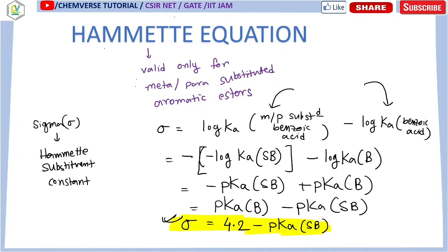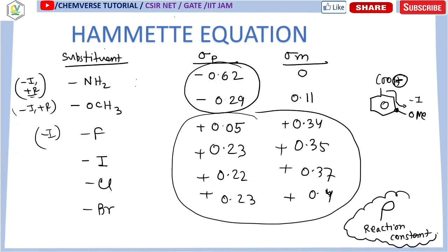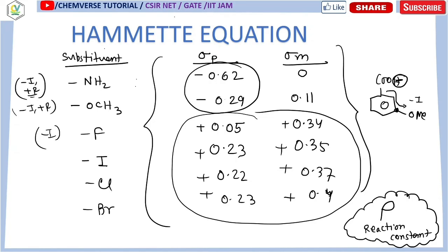This is the basic foundation of the Hammett equation. In the next class I will discuss another parameter called rho (ρ), the reaction constant. Most exam questions are framed around the reaction constant. We have already learned where the Hammett equation originates, the utility of different substituents, and how to find the Hammett substituent constant sigma. Stay tuned. If you liked the video, don't forget to share and subscribe. Thank you, happy learning.